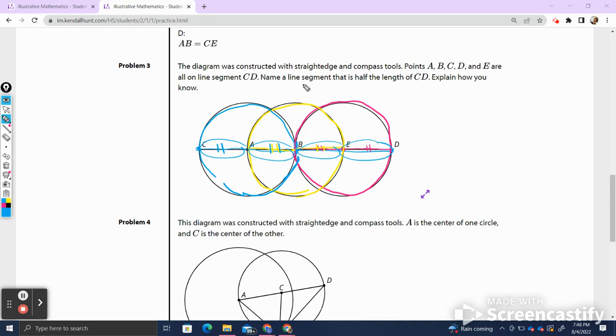So if I want a line segment that is half of CD, I have a few options to choose from. I can choose CB, which is half, I can choose BD, which is half, and I can even choose AE, which will also be half, because each of those are made up of two radiuses, which is half of the total length of segment CD, which is made up of four of these line segment radiuses that we just examined. Pause this video so you can go ahead and write the answer and explain how.